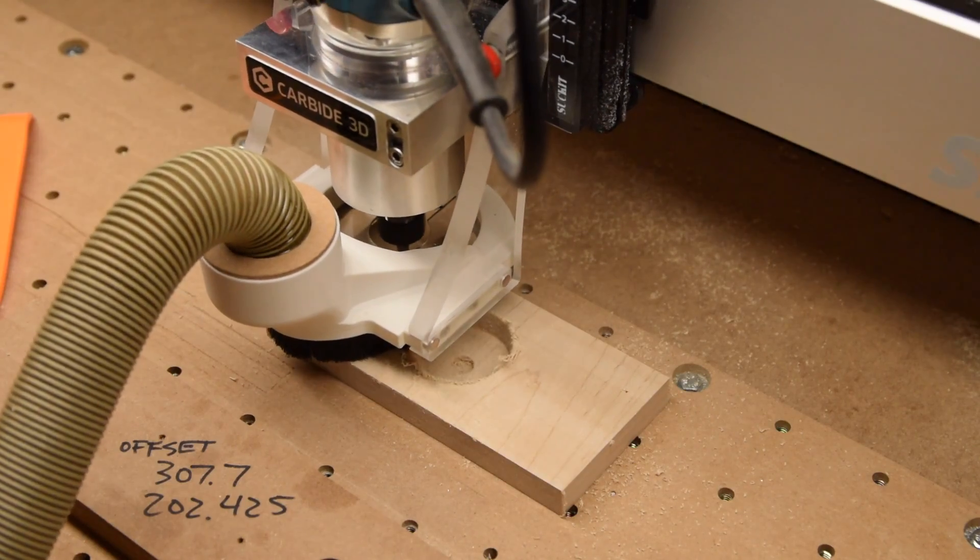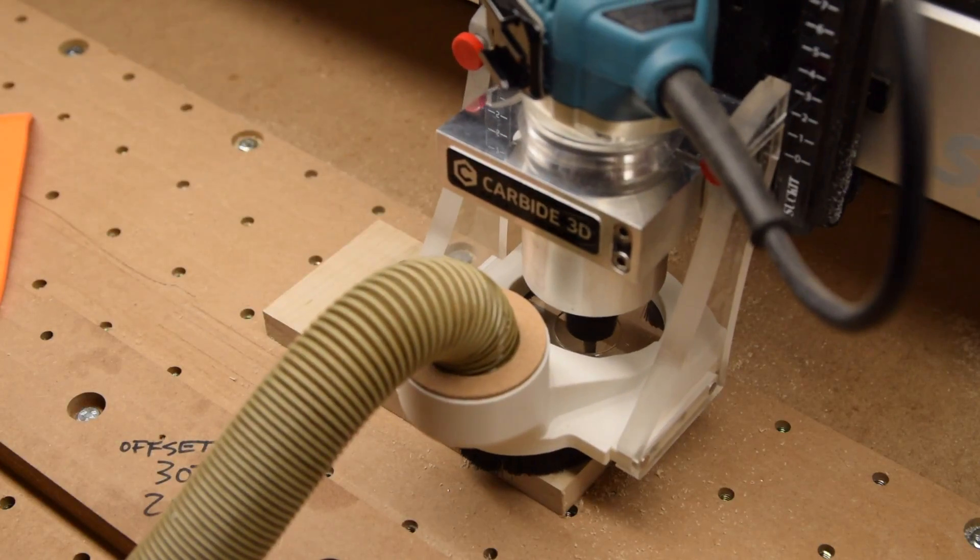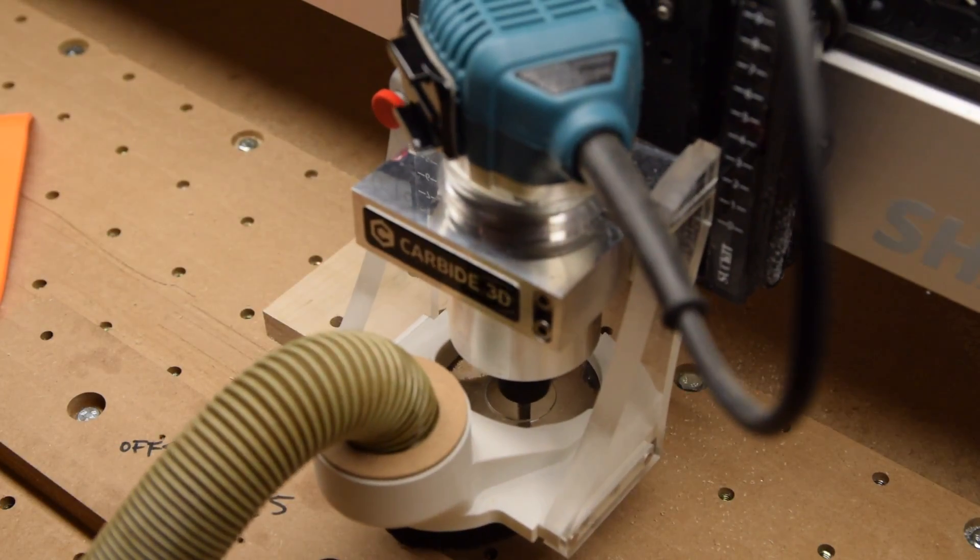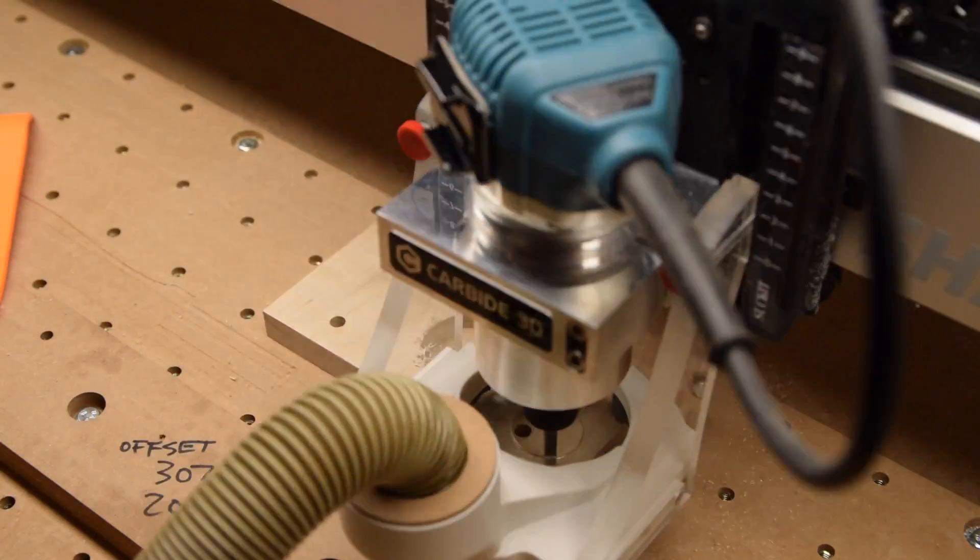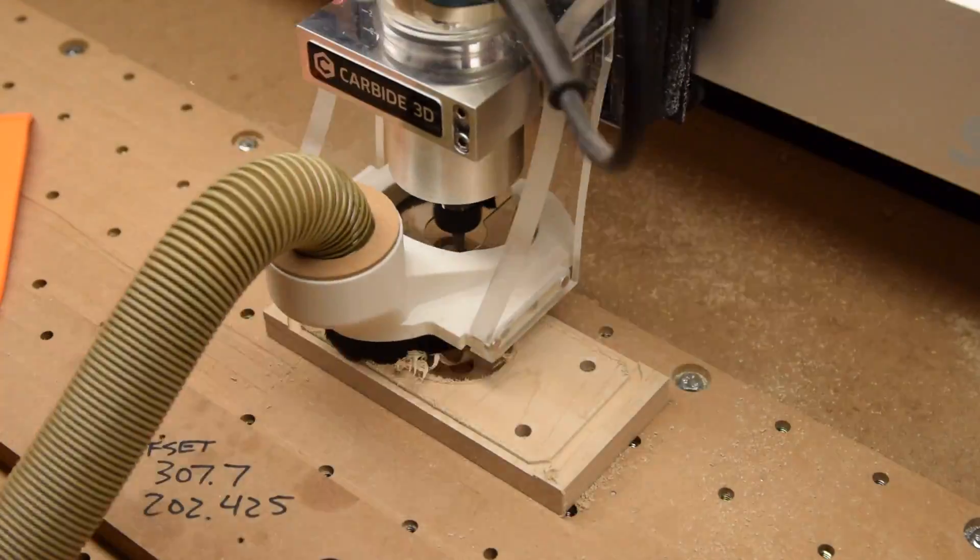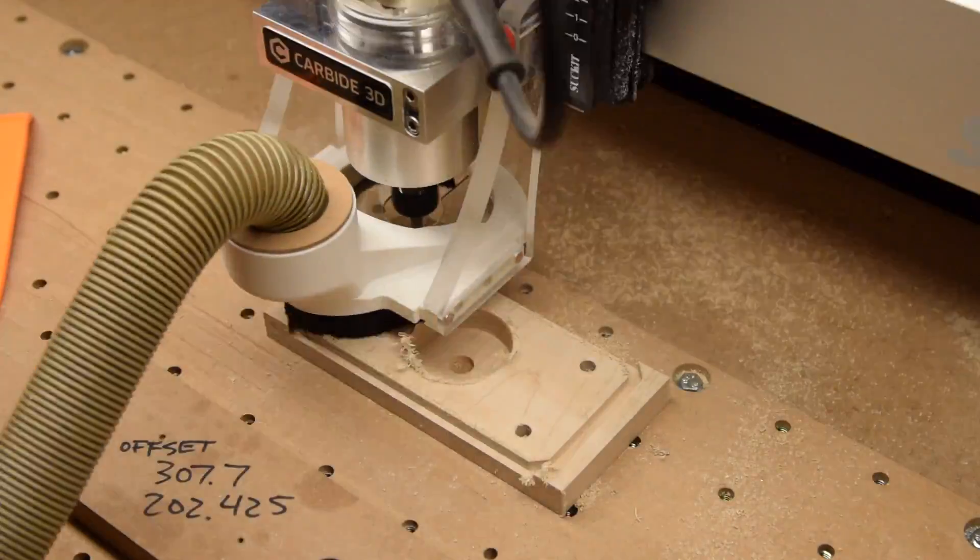The problem with this is that the calibration of the ShapeOko is slightly different than that of the Pocket NC. It's a less precise machine. So even though I programmed it to cut a 2 inch diameter pocket, it wasn't actually 2.000 inches in diameter.